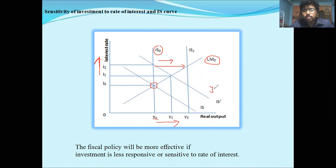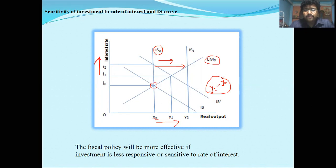The gap between IS-zero and IS-one is Y-zero and Y-one, that is Y-two minus Y-zero. This much difference is there when investment is interest inelastic. Now if investment is less interest elastic — that is, the investment is less responsive to the rate of interest — then this type of situation will happen.